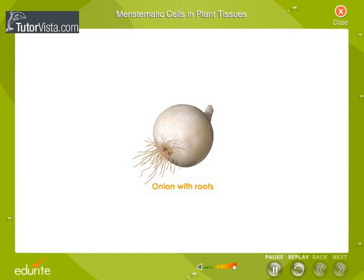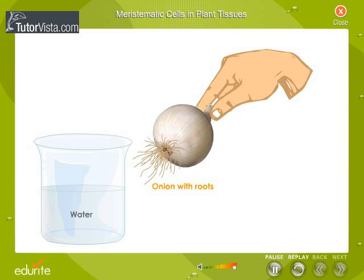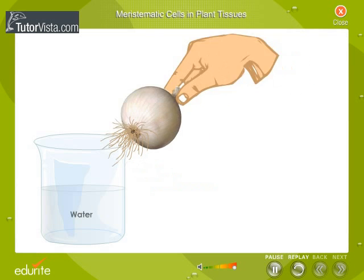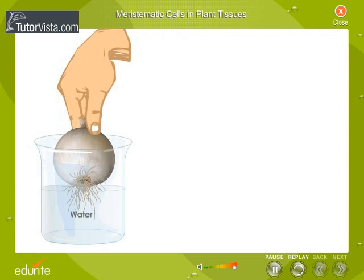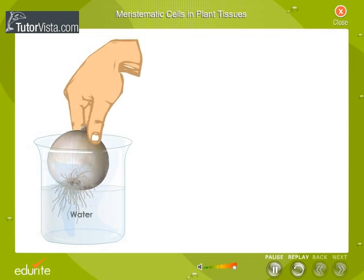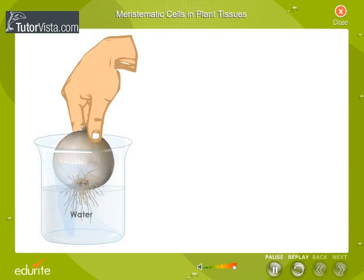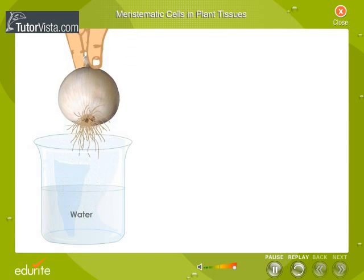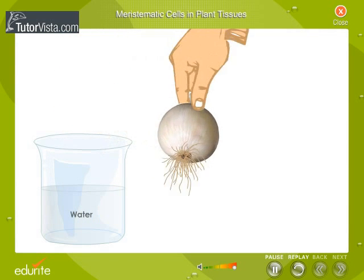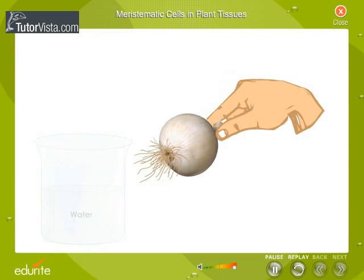Take a fresh onion along with its roots. Wash the roots with water and cut a longitudinal section of the root tip.